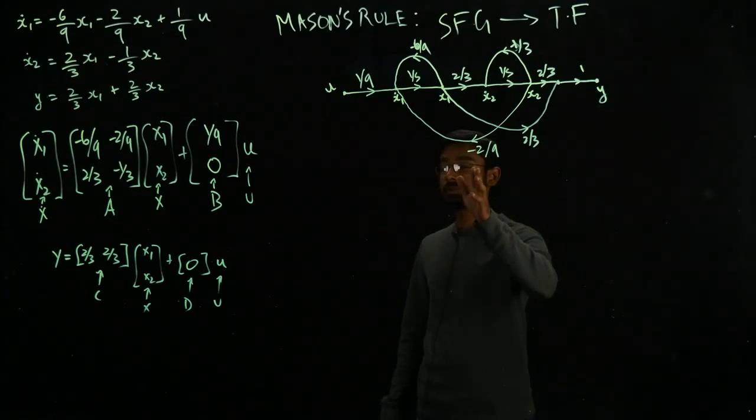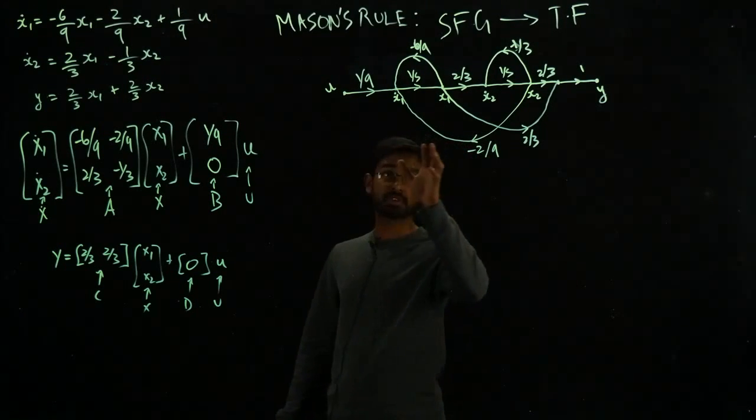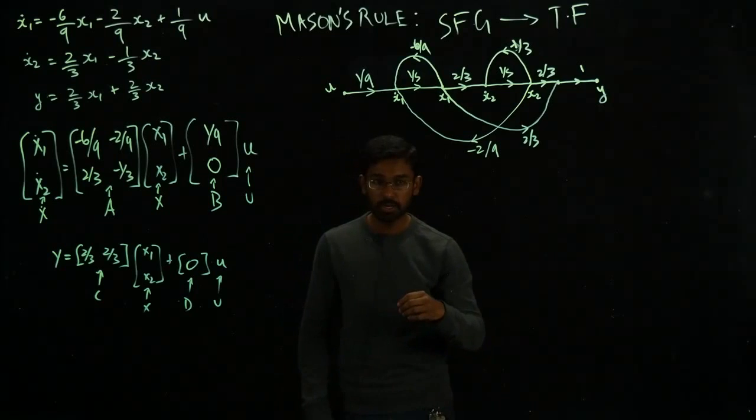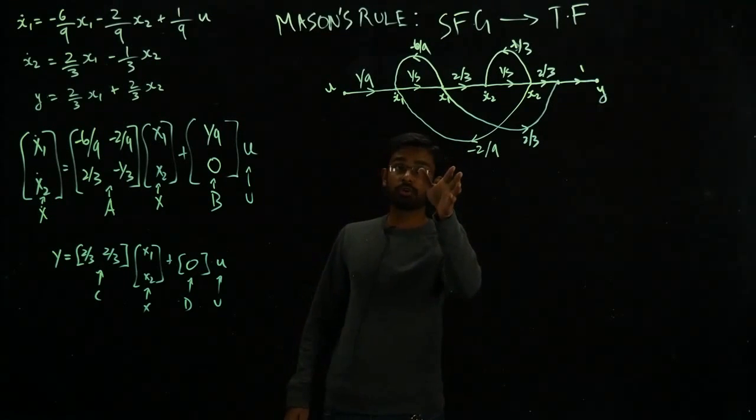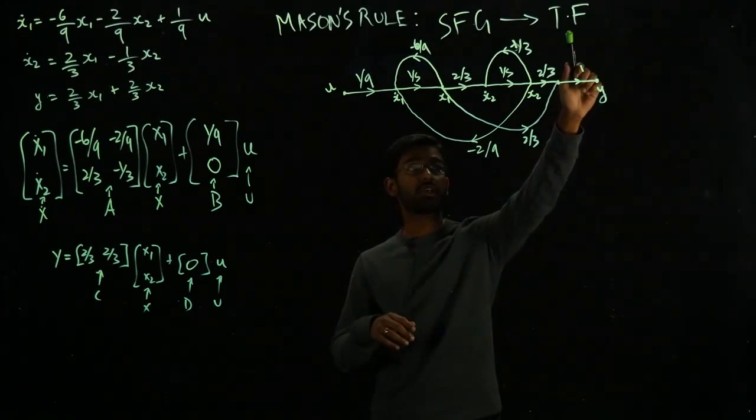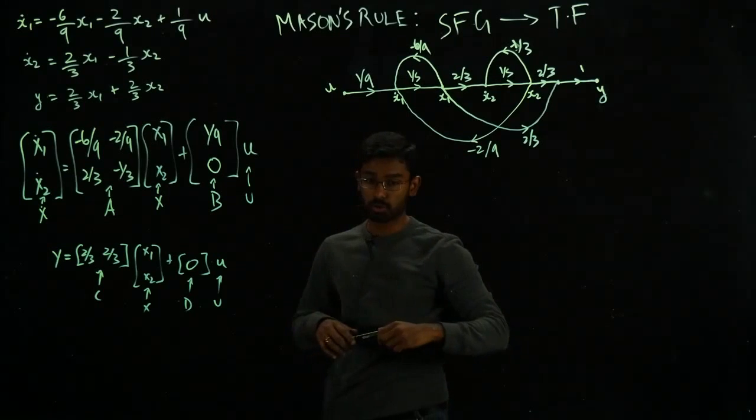What we were doing was representing the state-space equations in terms of a signal flow graph, and in this video, I'm going to talk about how to go from here to transfer functions. I'm going to use what is called the Mason's rule.